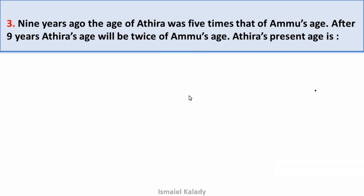Now the age problem is the next question. Nine years ago, the age of Adhira was five times that of Ammo's age. After nine years, Adhira's age will be twice Ammo's age. We need to find Adhira's present age. Two videos on age problems are already available on YouTube — please check the playlist.